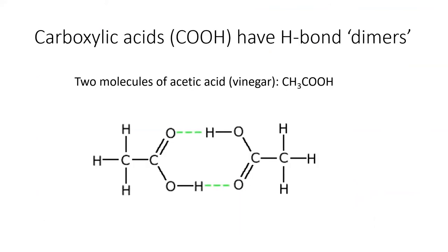The carboxylic acid functional group is common in organic chemistry, as well as in some of your favorite foods. Carboxylic acids tend to form little dimer pairs through two hydrogen bonds, which are shown here in green.